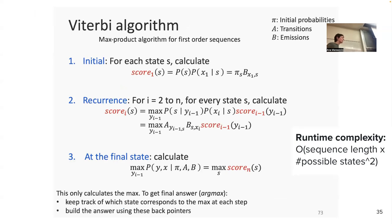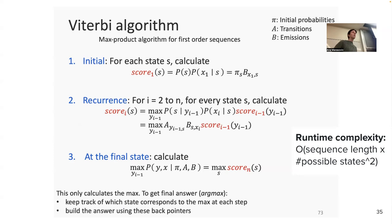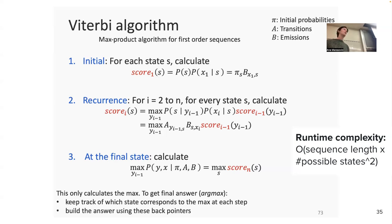The Viterbi algorithm's runtime complexity is sequence length times the square of the number of possible states, which is a big important improvement over the naive exponential complexity of states-to-the-power-of-sequence-length. Using this dynamic programming algorithm, we find the sequence of POS tags that maximizes the probability instead of naively trying all possible sequences, which would take far too long.